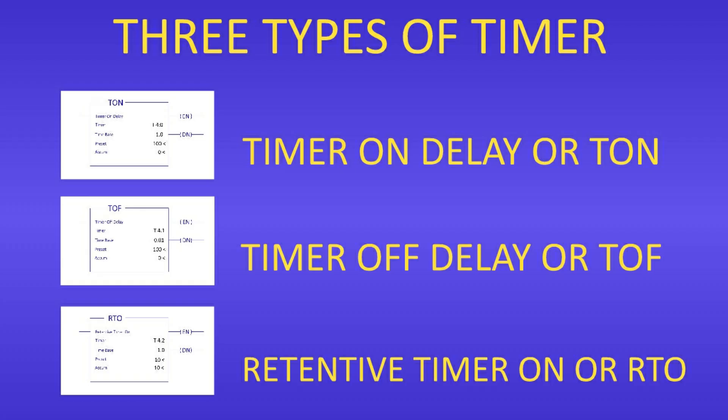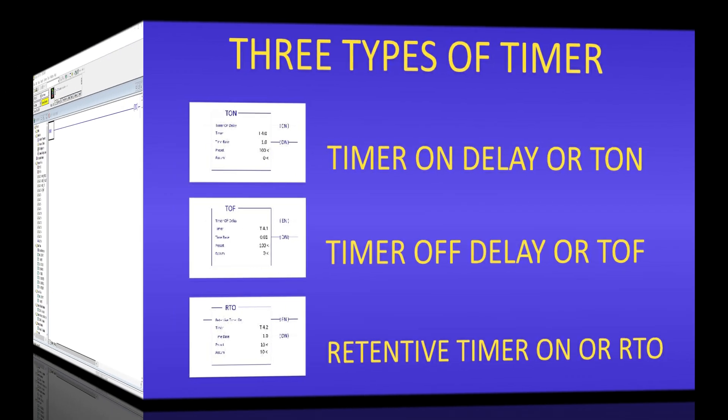There are three types of timer: Timer On Delay, or TON; Timer Off Delay, or TOF; and Retentive Timer On, or RTO.